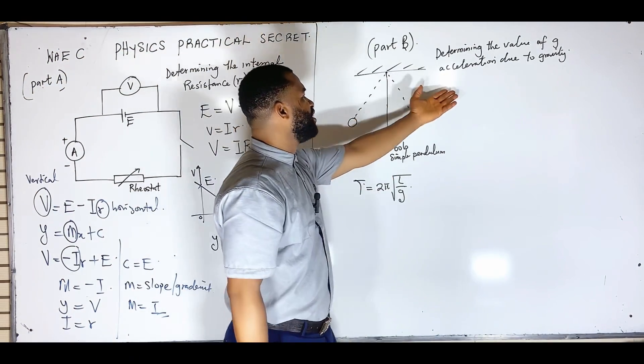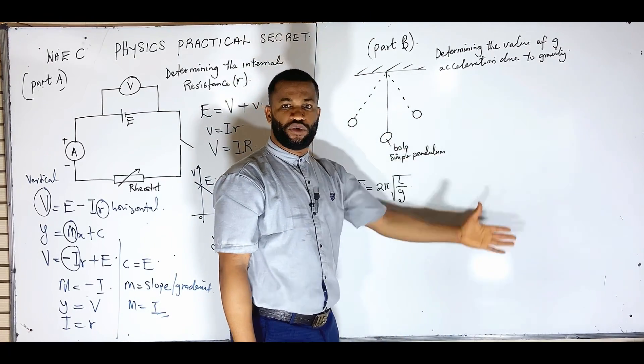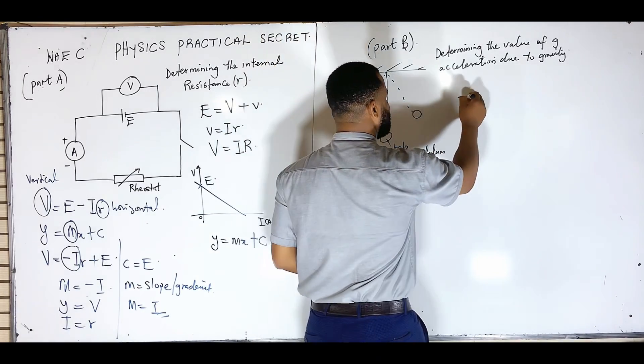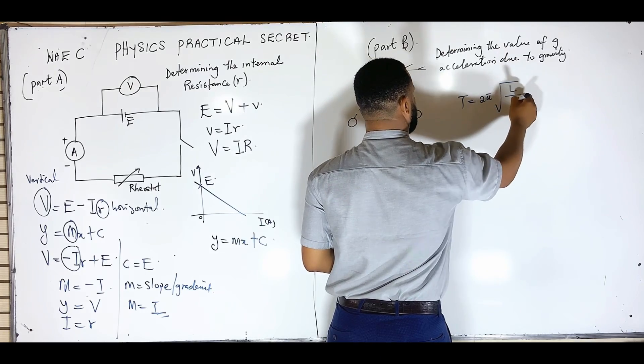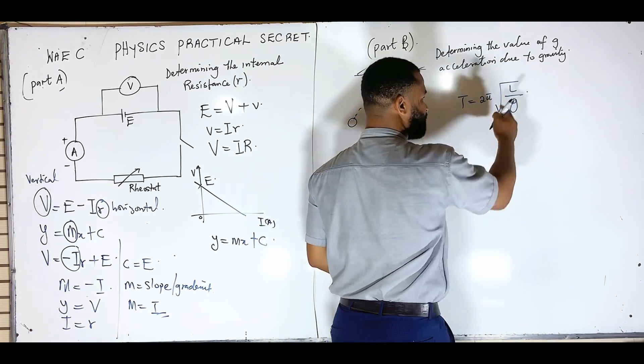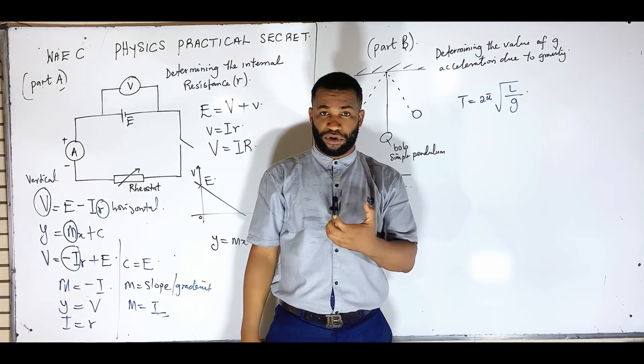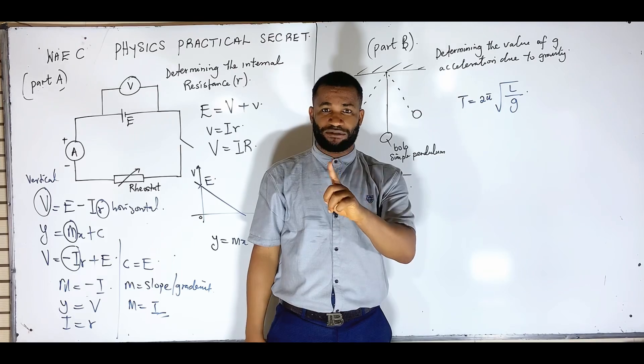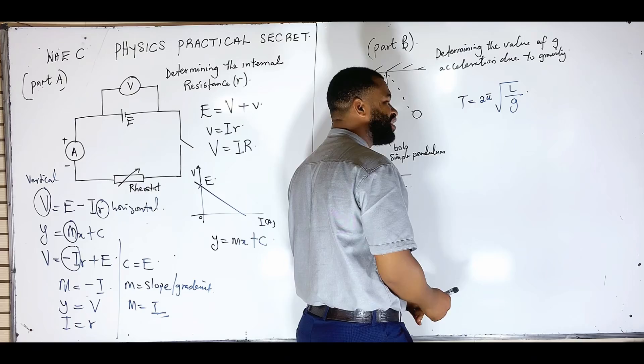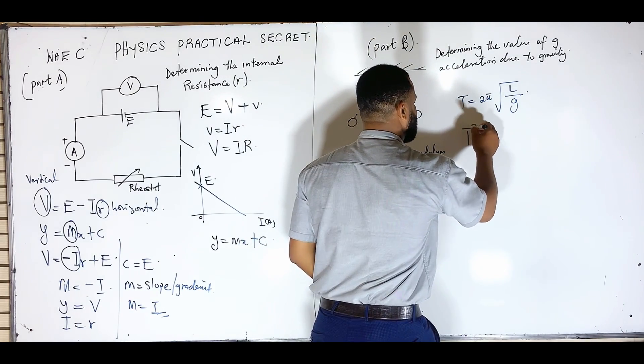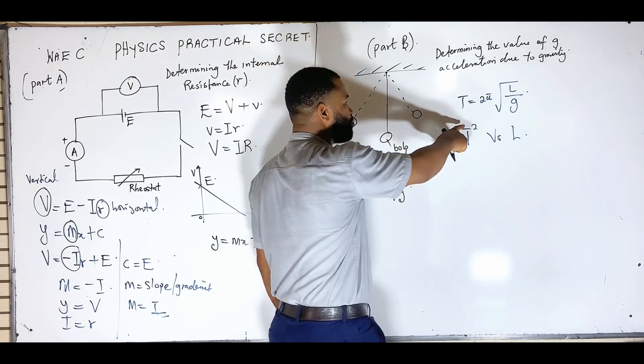Let's come to this one. You are asked to determine acceleration due to gravity. You know this determination will always use this equation: T equals 2π times the square root of L over g. The next thing you should ask yourself is what am I going to plot on the vertical and what am I going to plot on the horizontal? It is T square on the vertical versus L on the horizontal.